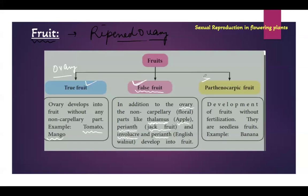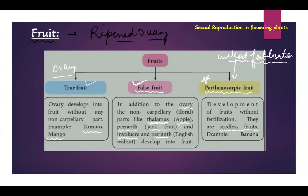There is one more category of fruits with a completely different feature - fruit forming without fertilization. We know that fruit and seeds always form after fertilization, but here fruit forms without fertilization, and therefore there is no seed formation. This leads to formation of seedless fruits. An example is banana. This kind of fruit is known as parthenocarpic fruit.